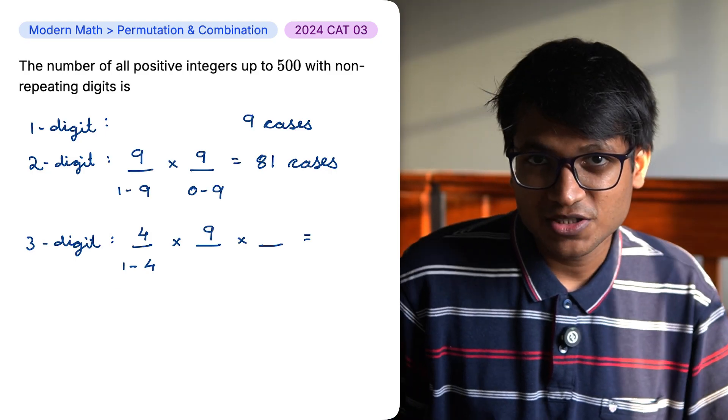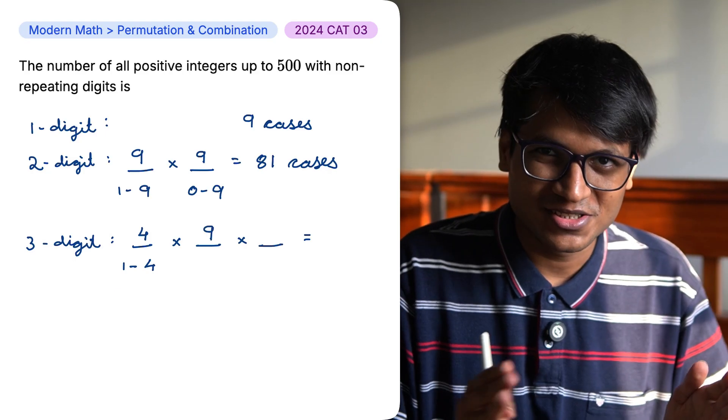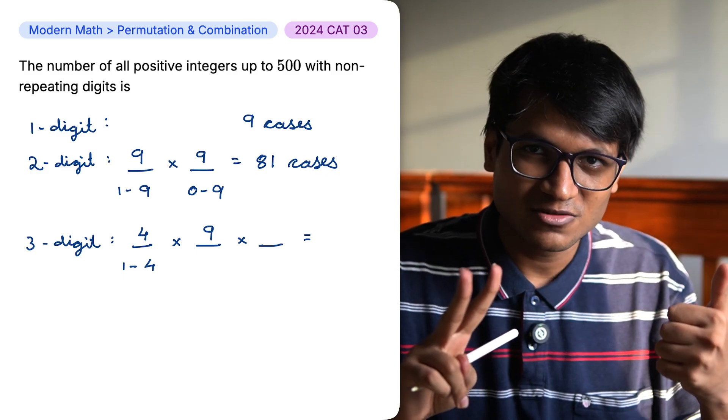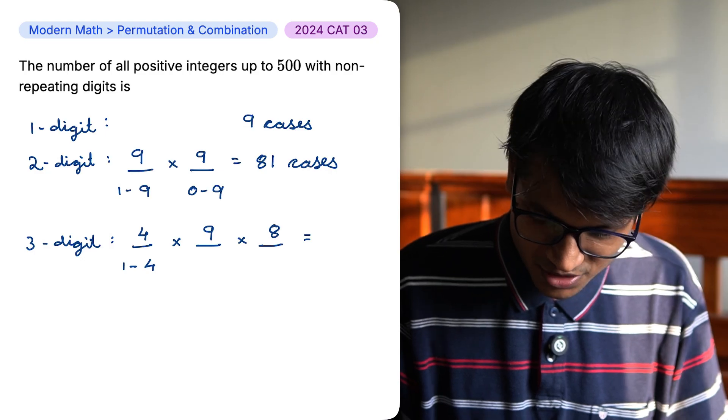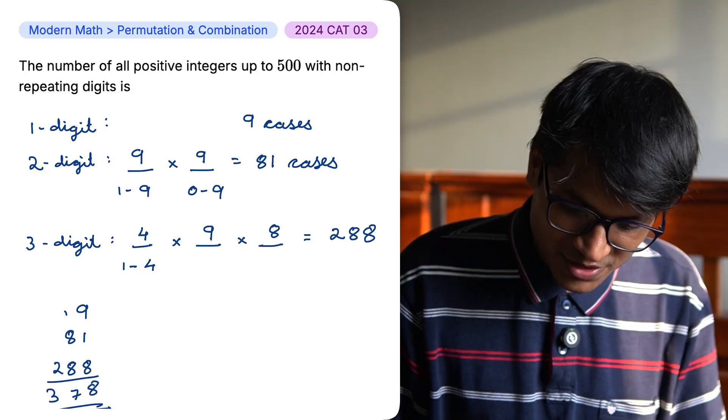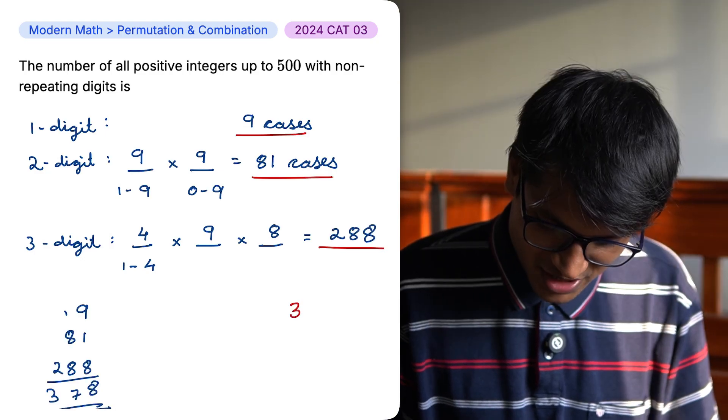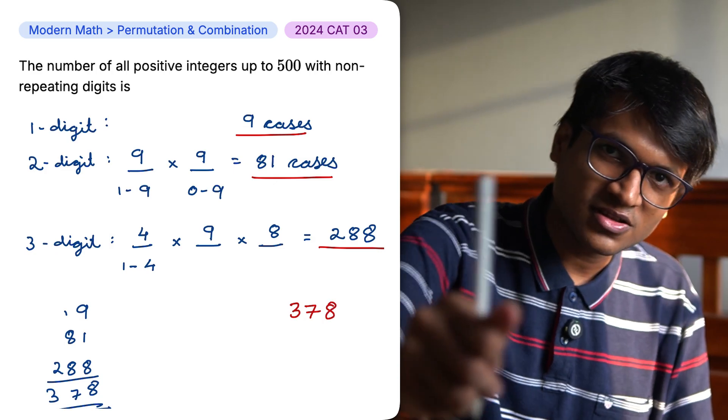In the units place, I have again 10 options but I'll have to subtract 2. 1 is the number in the hundreds place. 1 is the number in the tens place. So 4 into 9 into 8 which is 288. Now if you add, you get 378 which is your correct answer.